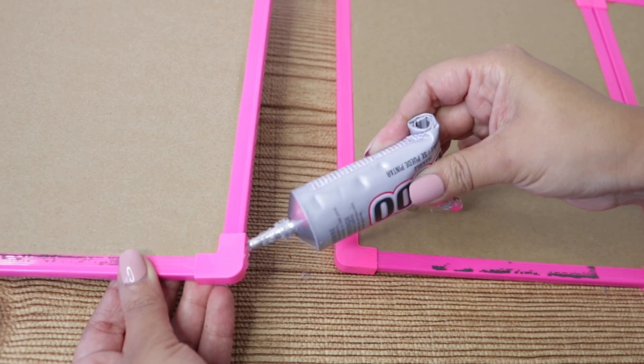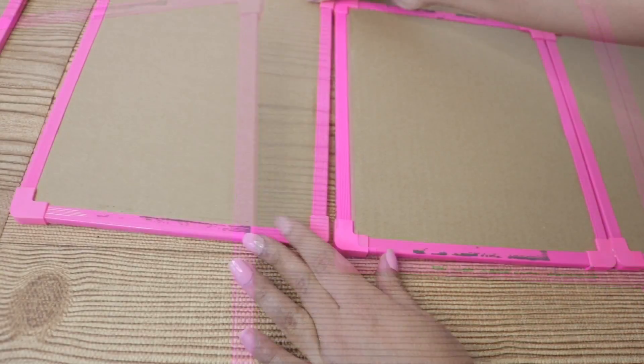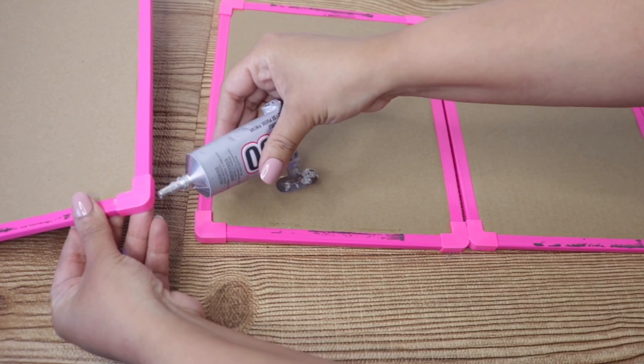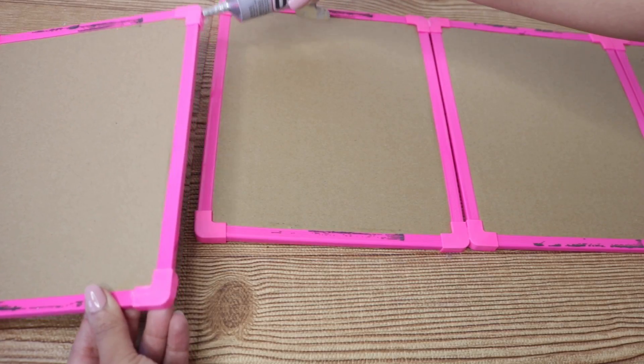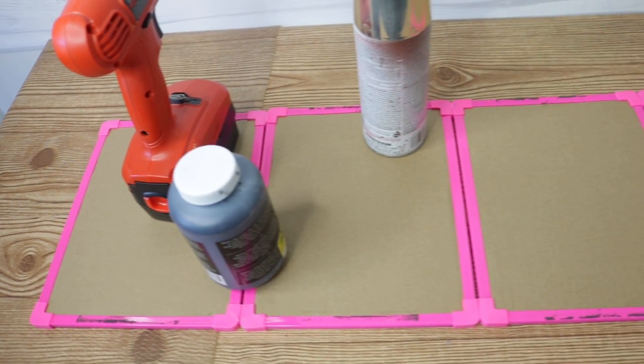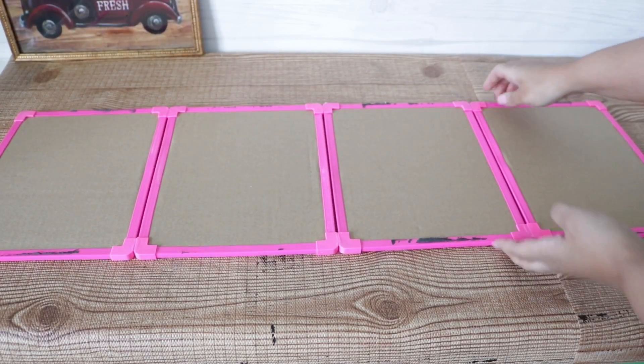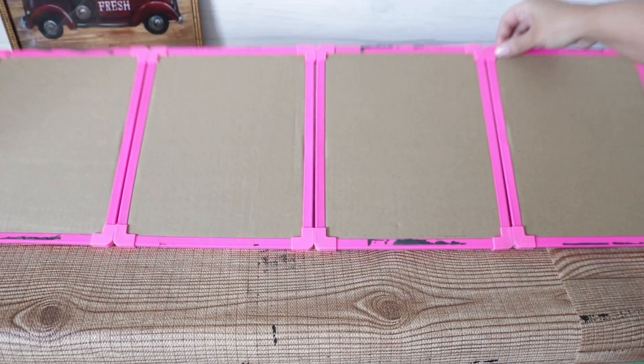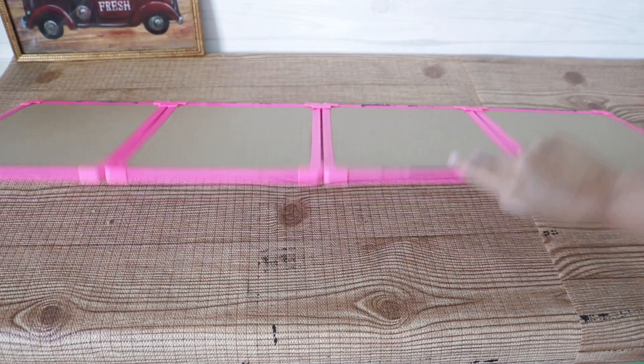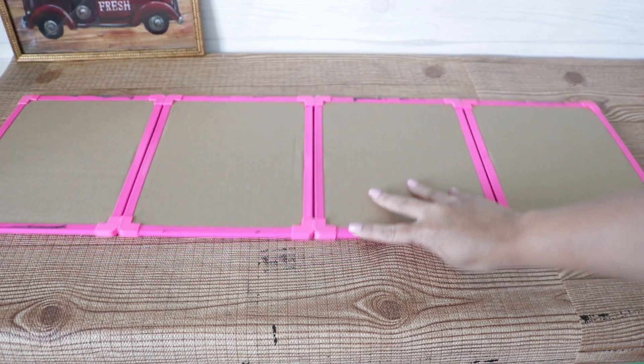Now you can go ahead and glue your second row if you want to. I didn't do this because I was testing out to see if hot glue would work as well, and spoiler alert it definitely doesn't. So I did add some weight to the frames as they dried because some of them do lift a little bit. The next morning they are perfectly attached, but I am going to reinforce this.